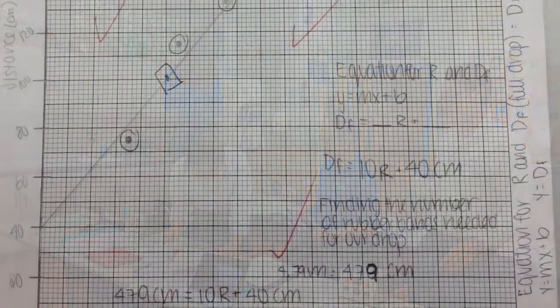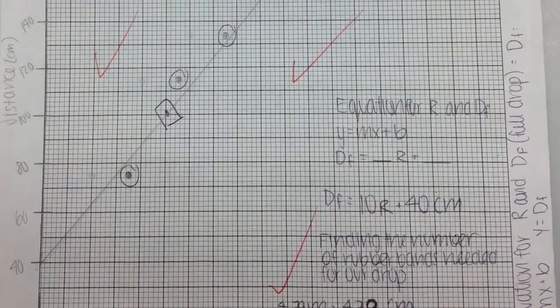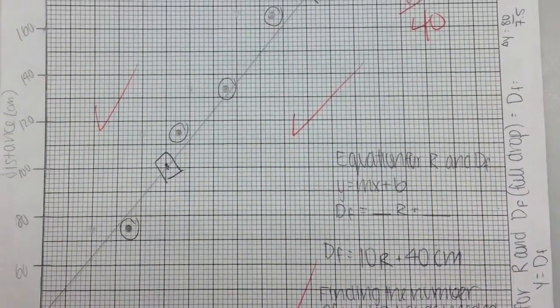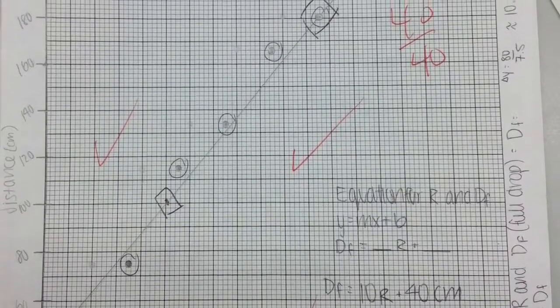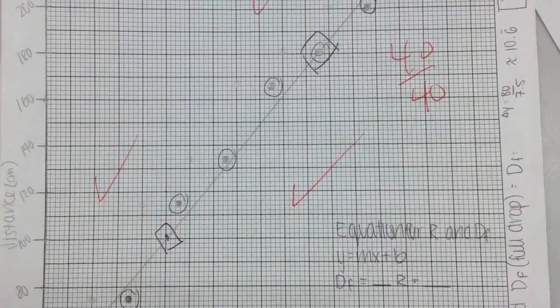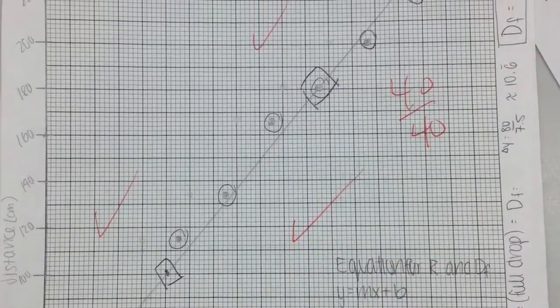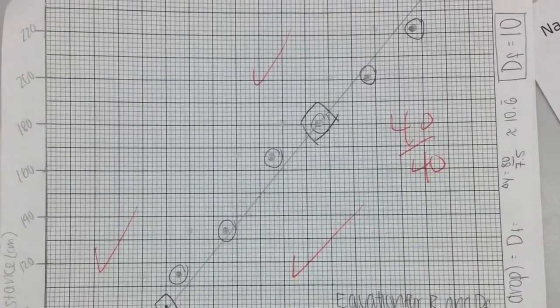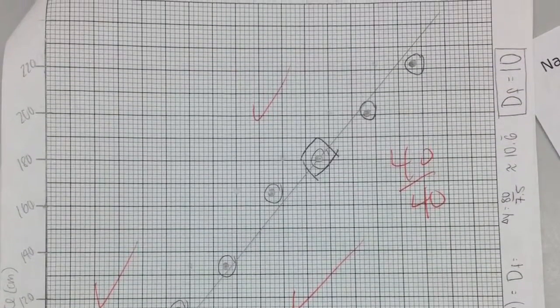Now that you have collected your data, it's time to plot your points. Using the y-axis as how far she fell in centimeters and the x-axis as the number of rubber bands you used, you can then use a line of best fit without connecting the lines to create your equation.